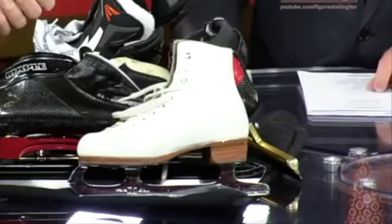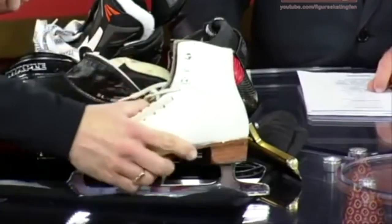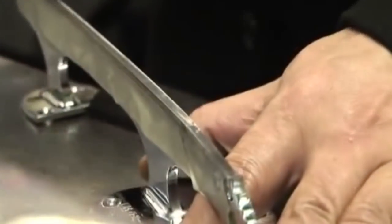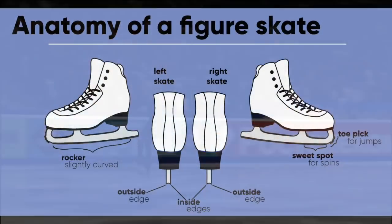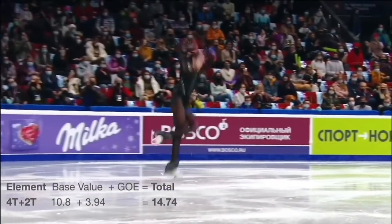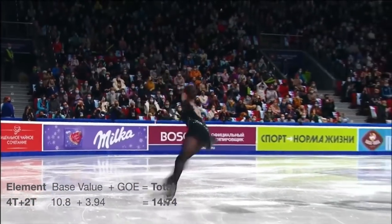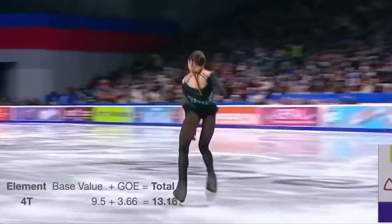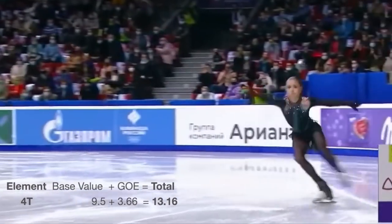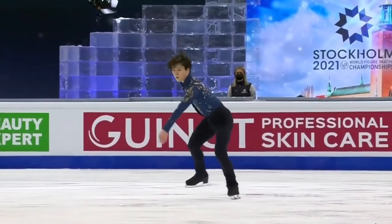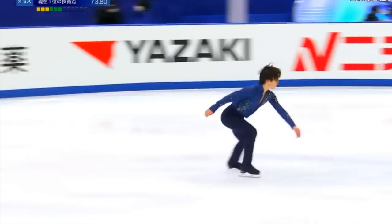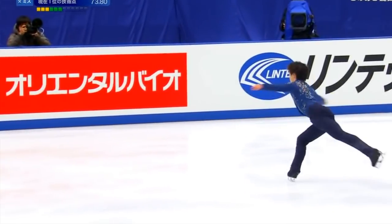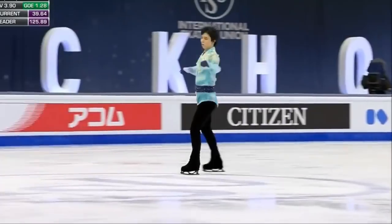On the figure skating blades there are two parts: the edge and the toe pick. In front there are two edges on the blade — the outside edge versus the inside edge. The toe loop is a jump with the toe-assisted takeoff. It's considered the easiest jump to add multiple rotations into, so in high level competitions like the World Championships, we will seldom see single or double toe loops. It's mostly quadruples and triples.